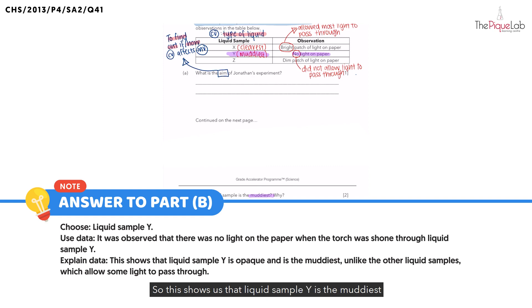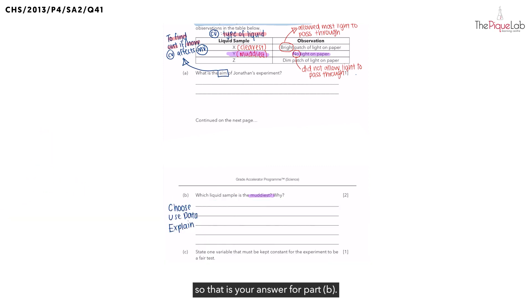This shows that liquid sample Y did not allow any light to pass through and it is opaque. So this shows us that liquid sample Y is the muddiest, unlike the other liquid samples which allowed some light to pass through. So that is your answer for part B.